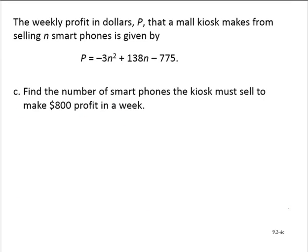Find the number of smartphones the kiosk must sell to make $800 profit in a week. So we want $800 profit, so then we will let P equal 800 and solve for n. So we'd have 800 is equal to negative 3n squared plus 138n minus 775.